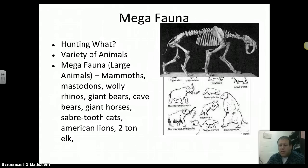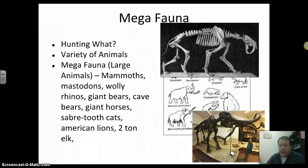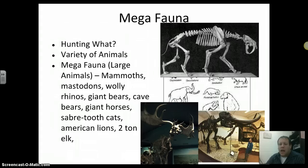Here's an example of a saber-toothed cat. This is a mastodon — this is actually the Boaz mastodon. These animals existed right where we live today. They found this mastodon here in Wisconsin; now it's in the Geology Museum at UW. They'd have animals like two-ton elk. Imagine — if you get one of these things, you can feed a lot of people for a long time. You had to have a big group of people to hunt these animals, and then these animals would feed a big group of people.